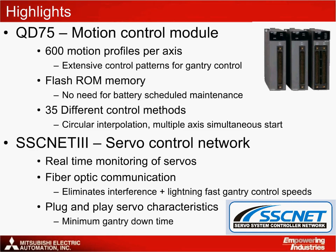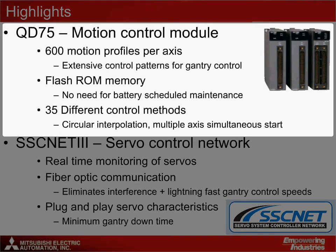At the centre of the application is the QD75 motion control module, which is an ideal addition to the Q-series PLC for one, two or four axis control. The QD75 can store 600 motion profiles per axis, giving it a large capacity for programs that rely on a high number of movements. A flash memory removes the need for scheduled maintenance checks and ensures no loss of data associated with battery-backed motion control modules. The QD75 has a variety of control methods such as circular interpolation and multi-axis start, that make setting up gantry control movements easy and allow safe transportation of materials.